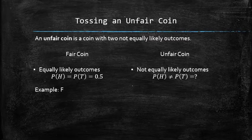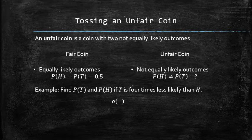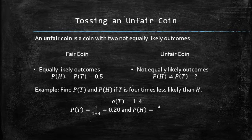Let's find the probability of tails and heads if tails are four times less likely than heads. The given information can be interpreted as the odds in favor of tails being 1 to 4. Therefore, the probability of tails is 20% and the probability of heads is 80%.